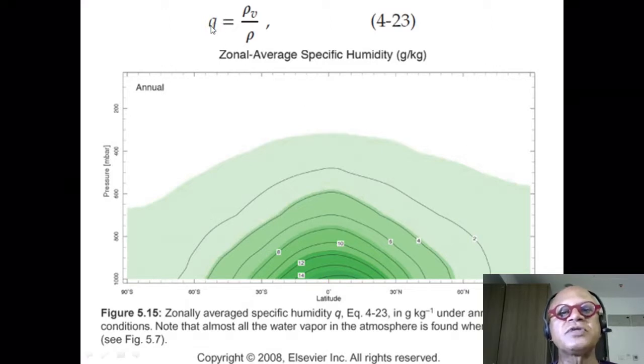So that's our specific humidity, density of the water vapor. We are dealing with unit volume. So instead of mass over mass, we can just do density over density where rho is the density of the air, which is density of the dry air plus water vapor.